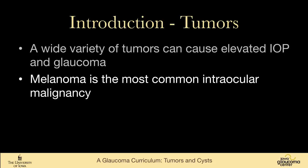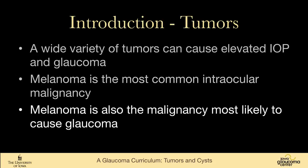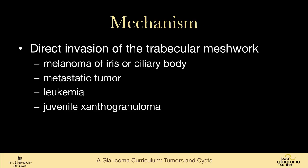Melanoma is the most common intraocular malignancy, and it's also the malignancy that is most likely to cause glaucoma. One of the ways that tumors can cause glaucoma is by directly invading the trabecular meshwork, and we see this in melanoma of the iris or ciliary body.